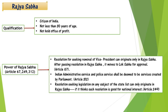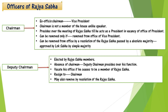Article 312 states that the Indian Administrative Service and Indian Police Service posts were created by Parliament. Proposals to make laws on any subject of the State List can only be made in Rajya Sabha — this is given under Article 249.